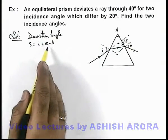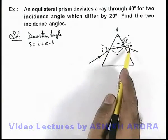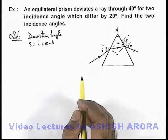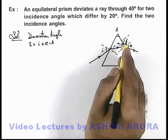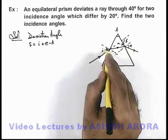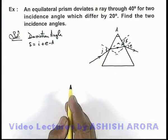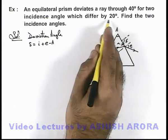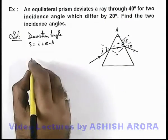And i and e are interchangeable, that means when i becomes equal to e, then that time the value of emergence angle is equal to the initial incidence angle. So in this situation, the value of delta remains same for two values of incidence angle, one is i and other is e. So here as it is given in the problem that two incidence angles differ by 20 degrees for which the value of delta is 40 degrees, so here we can write.